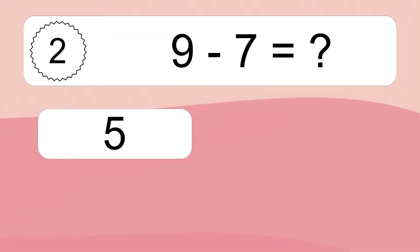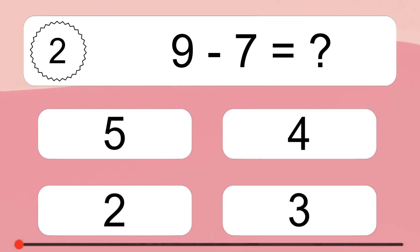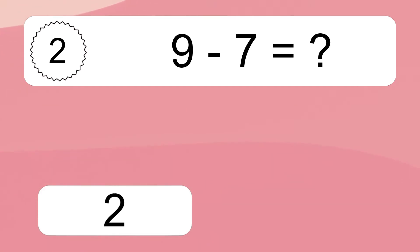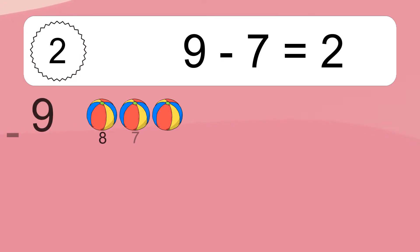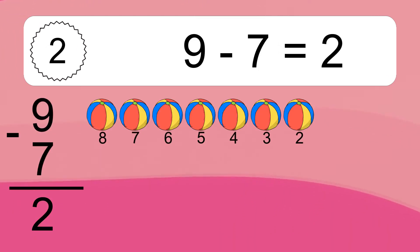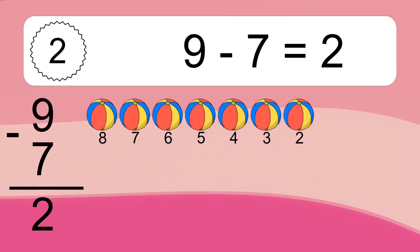9 minus 7 equals what? 9 minus 7 equals 2. Let's count it: 8, 7, 6, 5, 4, 3, 2.